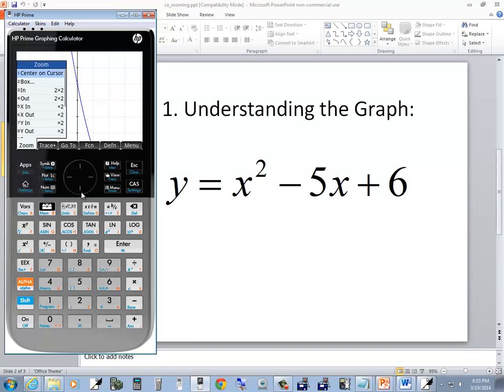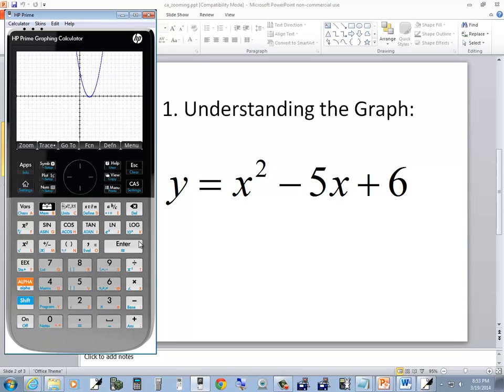Now if I choose zoom, and probably up arrow is the fastest way to get to it, but we're going to choose decimal and then press enter. That sets back to our standard view. That's zoom in.